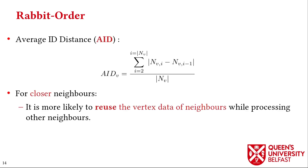To assess how Rabbit Order improves locality, we introduce the Average Distance (AID) metric, which measures the difference between IDs of consecutive neighbors of a vertex with a sorted neighbor list. If neighbors are closer to each other in ID space, we can expect data reuse to be more likely. In this way, AID can be an indicator of spatial locality.